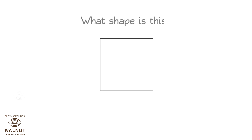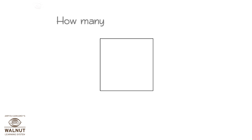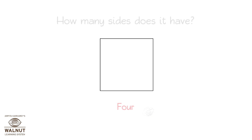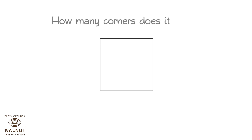What shape is this? Square. How many sides does it have? Four. How many corners does it have? Four.